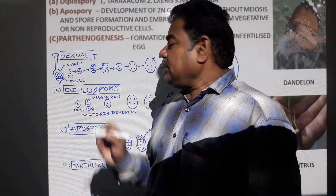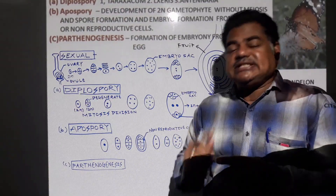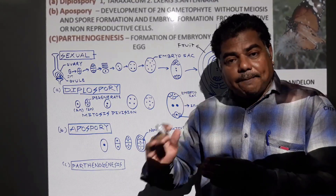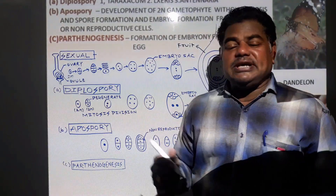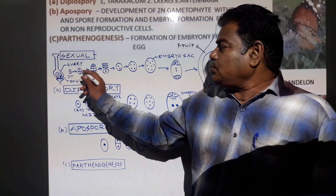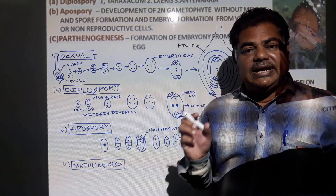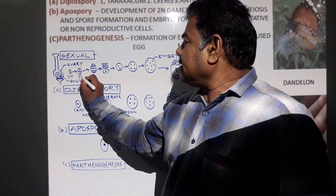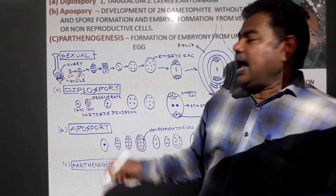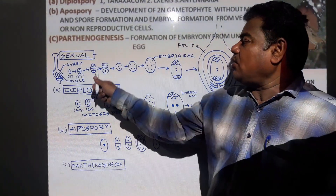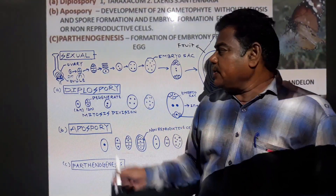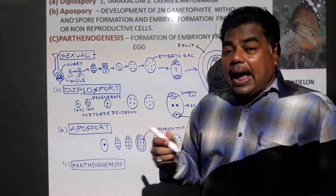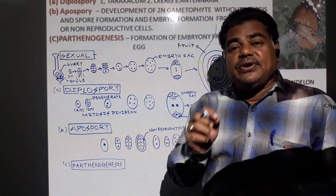The first cell from which egg formation takes place is diploid in nature. Meiosis cell division — the reductional cell division — takes place, reducing the chromosome number to half. From one cell, two haploid cells form, then four cells. Three of the four megaspores degenerate, and only one functional megaspore remains. From this functional megaspore, the haploid nucleus undergoes free nuclear division.